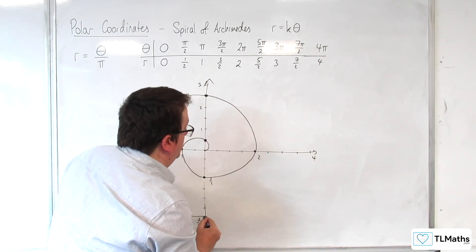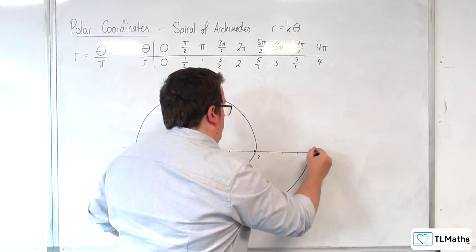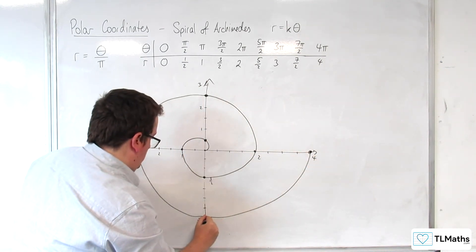And then we get to 4. When theta is 4 pi. Like so.